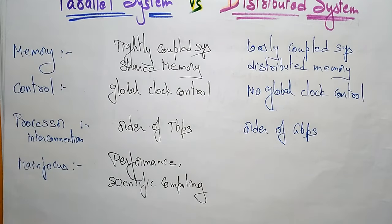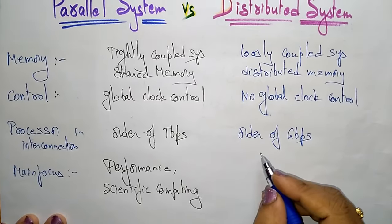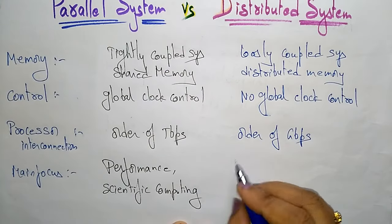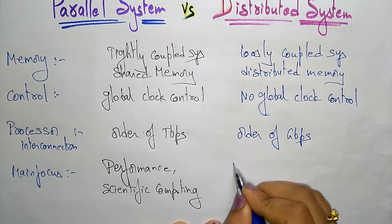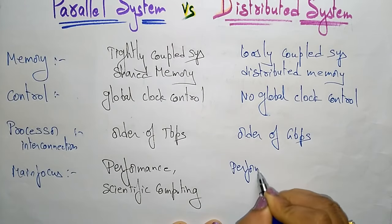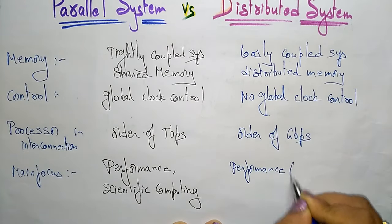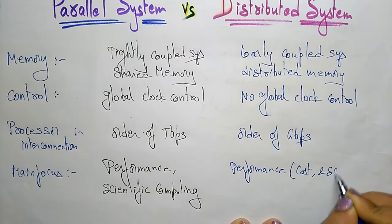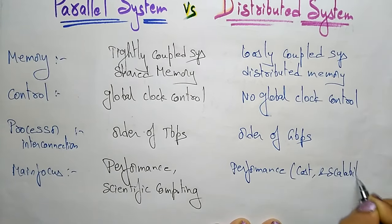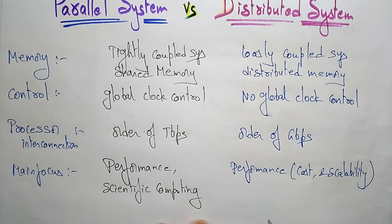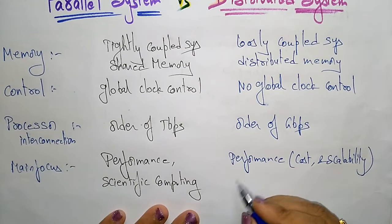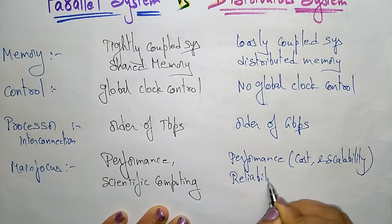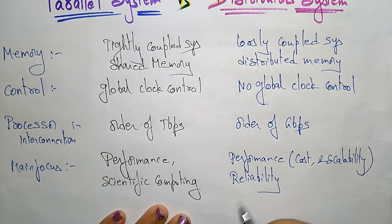Now coming to the distributed system — what is the distributed system's main focus? The distributed system's main focus is also on performance, but specifically on cost and scalability. It also focuses on reliability and resource sharing.